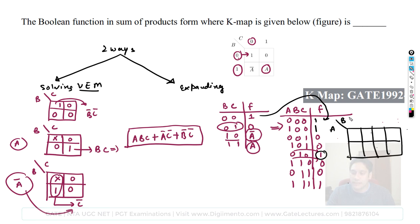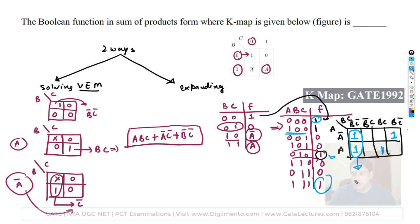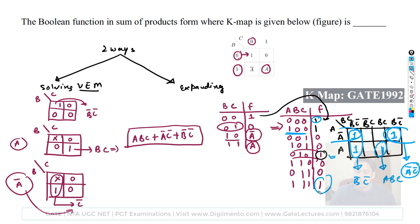Building the K-map with A on one axis and BC on the other: ones occur at A·B-complement·C-complement, A-complement·B·C-complement, and the BC=00 cells. Sub-cubes give terms: ABC, B-complement·C-complement, and A-complement·C-complement. The result — ABC plus B-complement·C-complement plus A-complement·C-complement — matches the result from method one exactly.